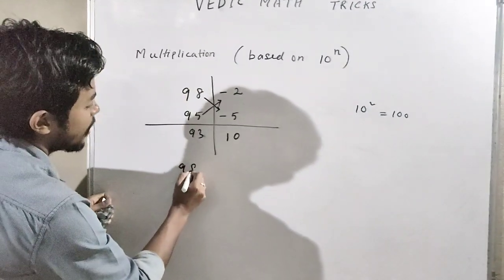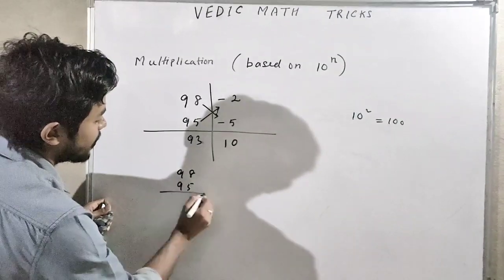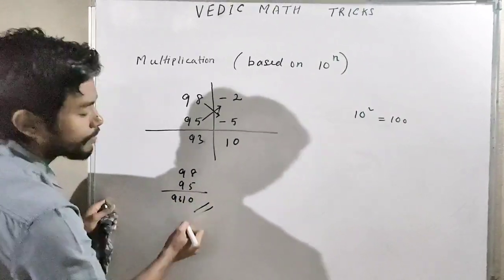Therefore it will be 9310. That is, 98 into 95, the result we get is 9310.